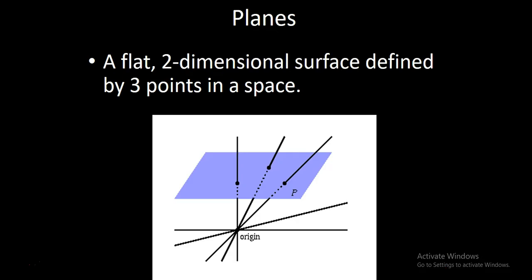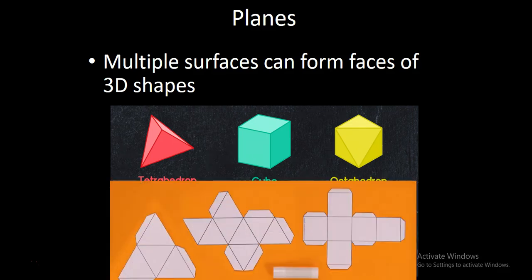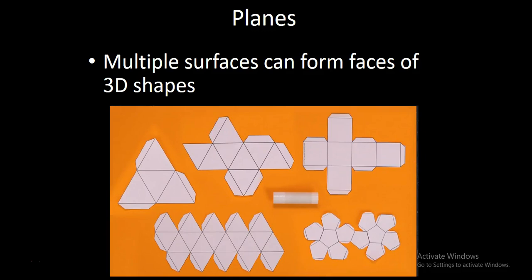We've talked about points and lines, then we can talk about planes. Planes are flat two-dimensional surfaces defined by three points in space. Planes create surfaces, and surfaces can be used to form 3D geometry like these Platonic solids. And of course these shapes can also be developed geometrically to be able to unfold them and then to fabricate them out of, let's say, thin material like metal or cardboard.